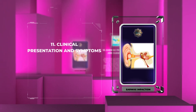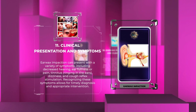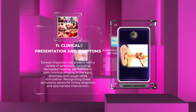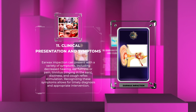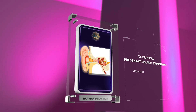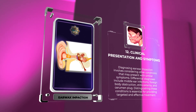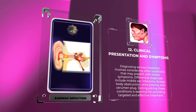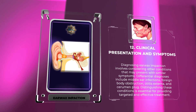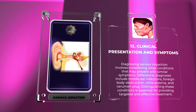Earwax impaction can present with a variety of symptoms, including decreased hearing, ear fullness or pain, tinnitus, ringing in the ears, dizziness, and cough reflex stimulation. Recognizing these symptoms allows for timely diagnosis and appropriate intervention. Diagnosing earwax impaction involves considering other conditions that may present with similar symptoms. Differential diagnoses include middle ear infections, foreign body obstruction, otitis externa, and cerumen plug. Distinguishing these conditions is essential for providing targeted and effective treatment.